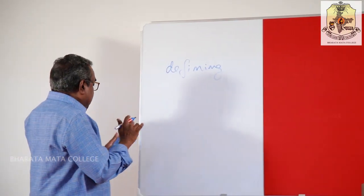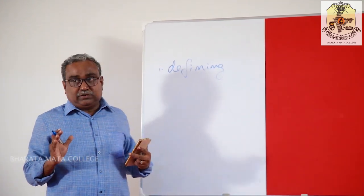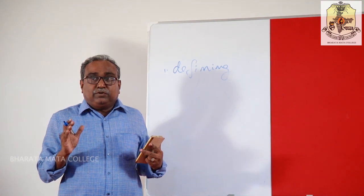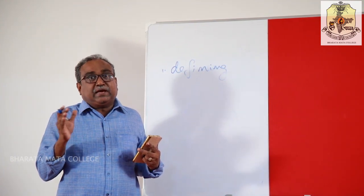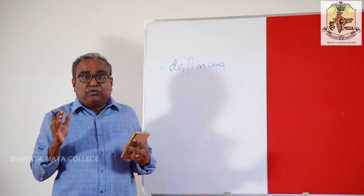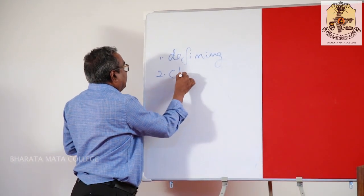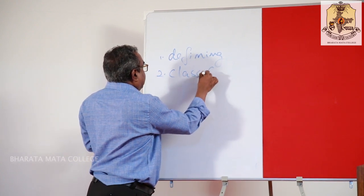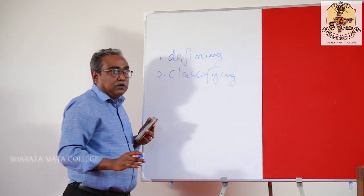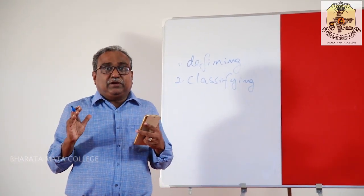The first point is defining a literary work. Defining a literary work means we look at the different genres and what kind of literary work it is. The second one is classifying — we will be making different categories of the literature.